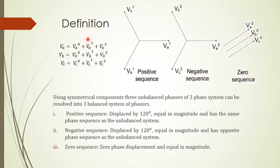How about the positive sequence? The positive sequence voltages have the same amplitude as they are balanced, but the sequence is positive — a, b, and c — and they are rotated clockwise. And finally, for the negative sequence, they are also balanced. vA equals vB and equals vC in the negative sequence, but the order is a, b, and c counter-clockwise.